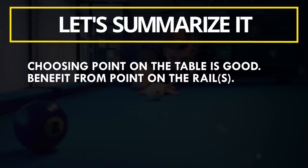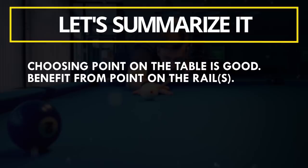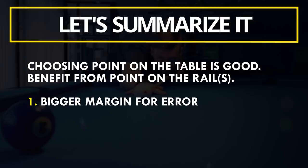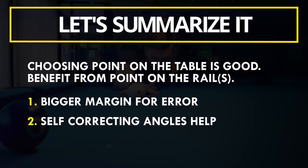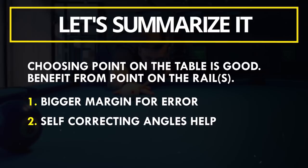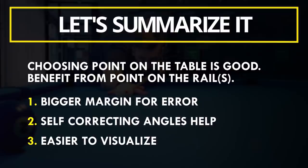So as you saw, choosing a point on the table is a good idea, but in some cases it is required to also choose a point on the rail in order to get to the point on the table. The advantages are that very often we have a higher margin for error regarding speed control. The self-correcting angles also help us to get the right position if we are a little off — of course only if you are using more rails. And it is also a lot easier to visualize a point on the rail because there either is a diamond, you hit exactly between two diamonds, or one third, and so on.